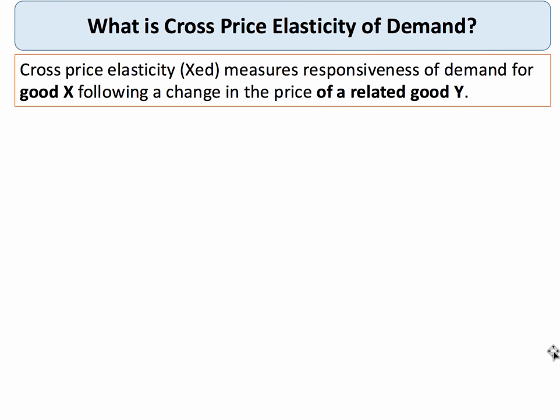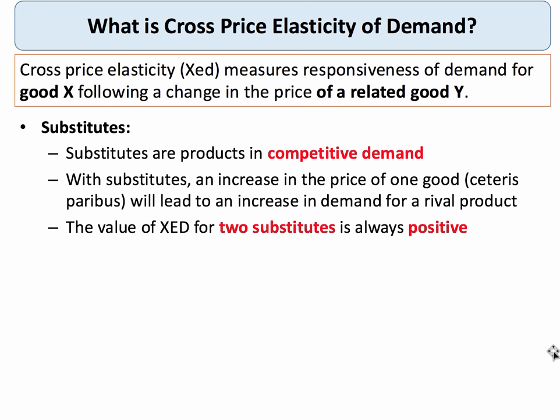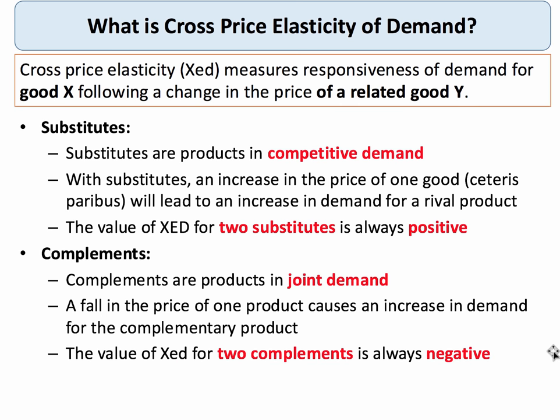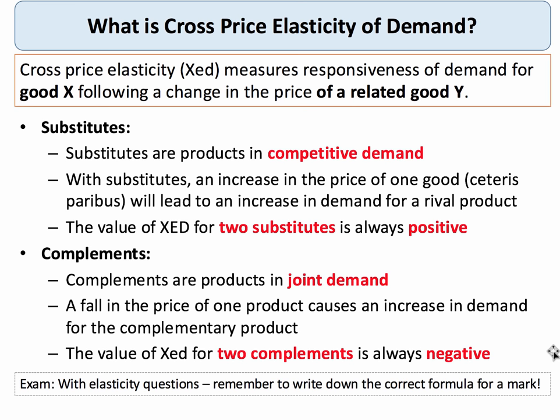We make a clear distinction between substitute and complementary products. With substitutes — for example, brands of cereal — these are products in competitive demand. An increase in the price of one good will lead to an increase in demand for a rival competing product, so the cross price elasticity for two substitutes is always positive. Complementary goods are in joint demand, meaning if you buy more of one good you're likely to buy more of another, and the cross price elasticity for two complements will always be negative.